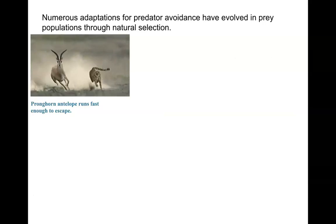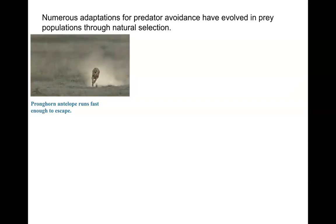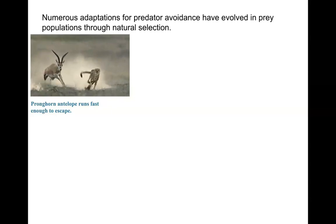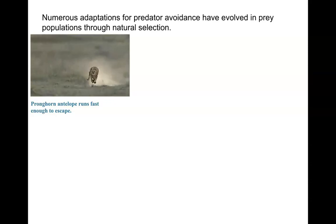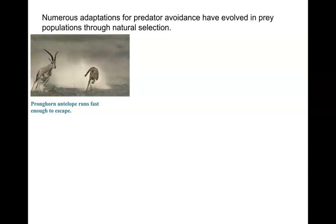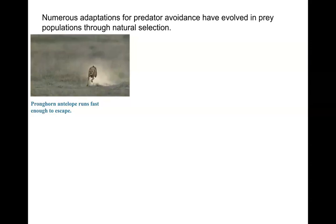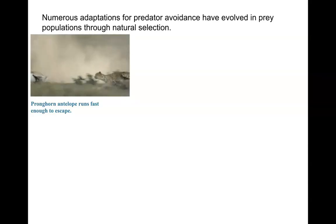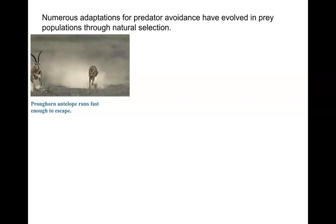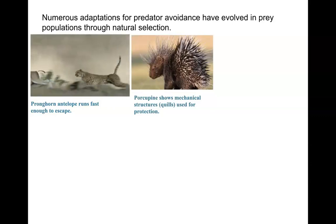Numerous adaptations for this predator-prey relationship have resulted via natural selection, leading to the evolution of different species. Here I have a pronghorn antelope running quite fast — look at those turns and legs allowing it to outrun this cheetah. Those better able to run away from cheetahs were more successful and not preyed upon. Porcupines have mechanical structures — quills — to ward off predators and use for protection.